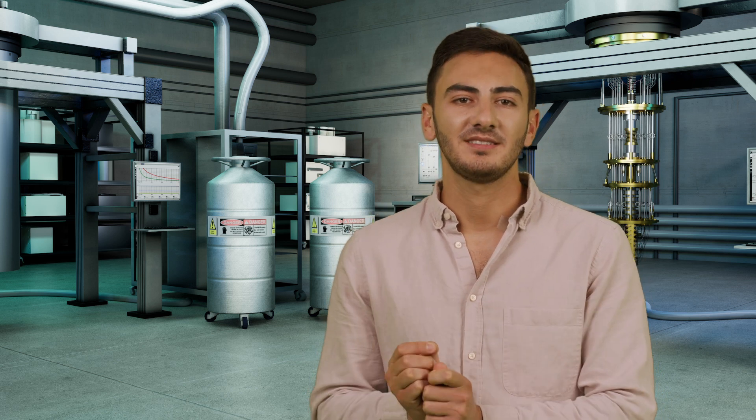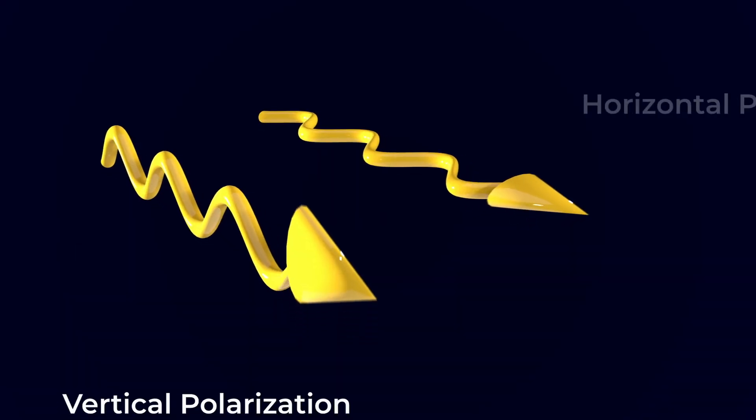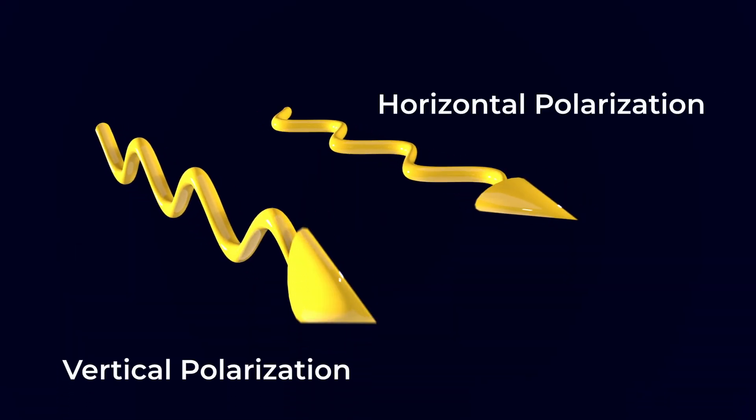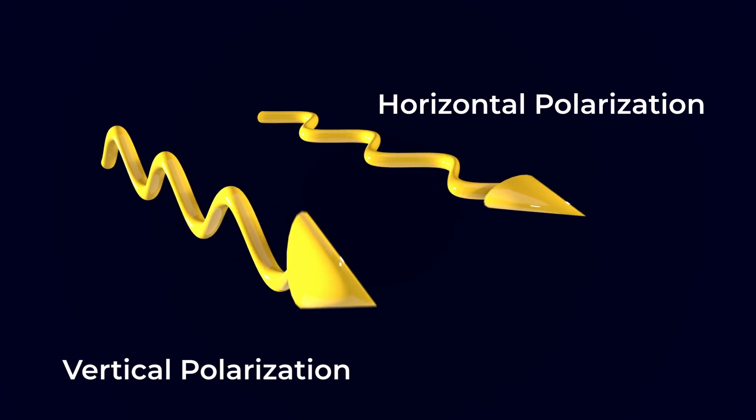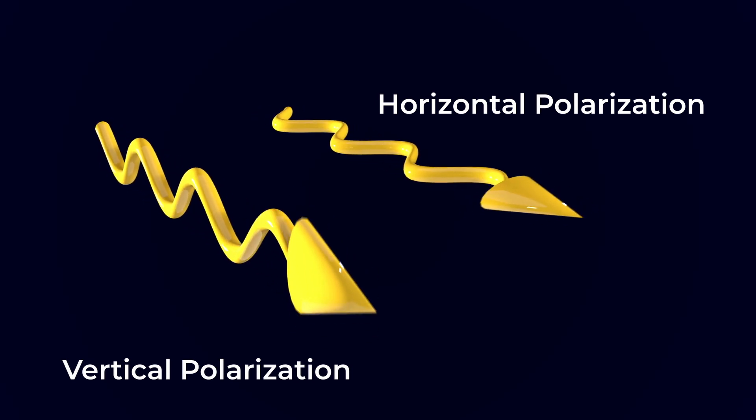You may have heard light described as a wave before, but at the quantum scale we can even think of light as individual particles called photons. These photons themselves have a quantized property that we call polarization, very similar to how an electron has the quantized property of spin. Polarized light is used in a lot of quantum communication because photons are easier to send over long distances than other particles like electrons.